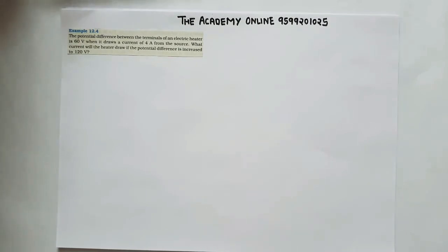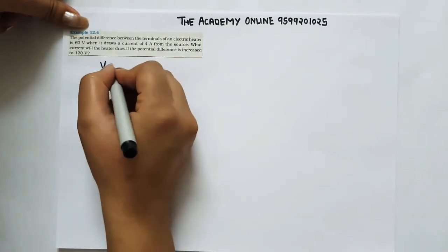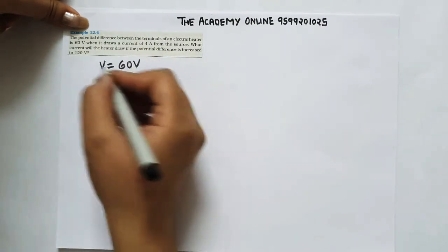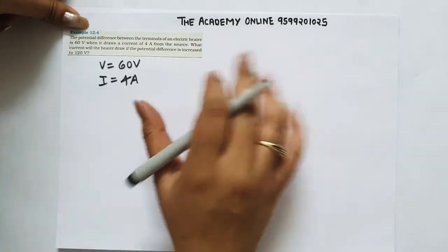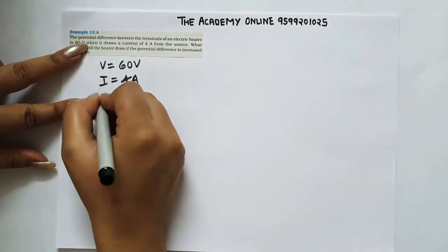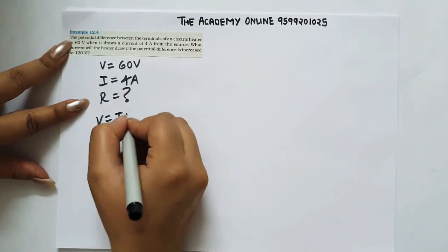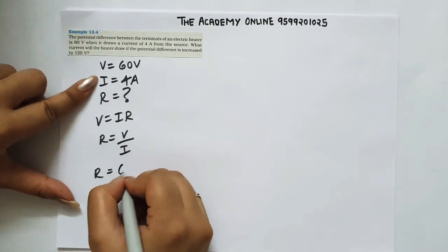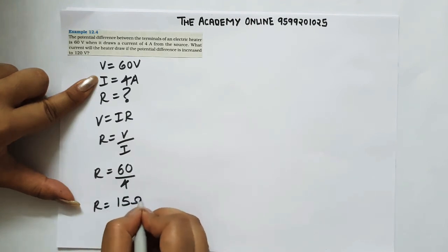For problem 12.4, write down: V is equal to 60 volts, I is equal to 4 amperes. First we find R. R is equal to V upon I, that is 60 divided by 4, so R equals 15 ohms.